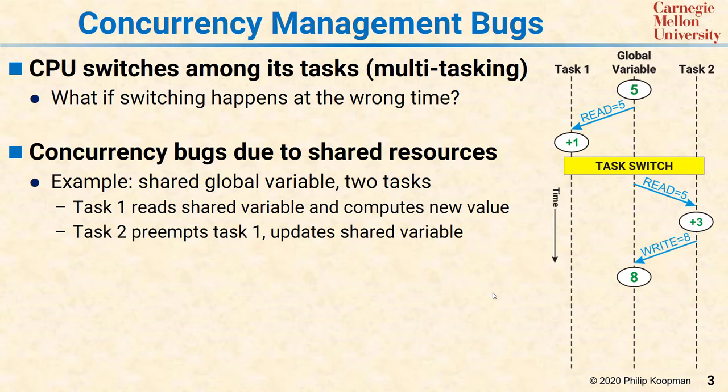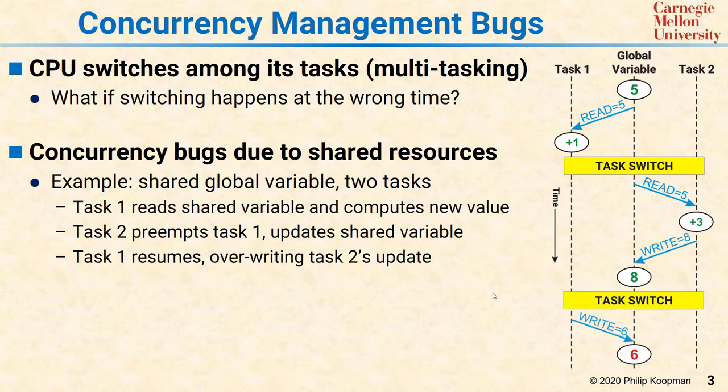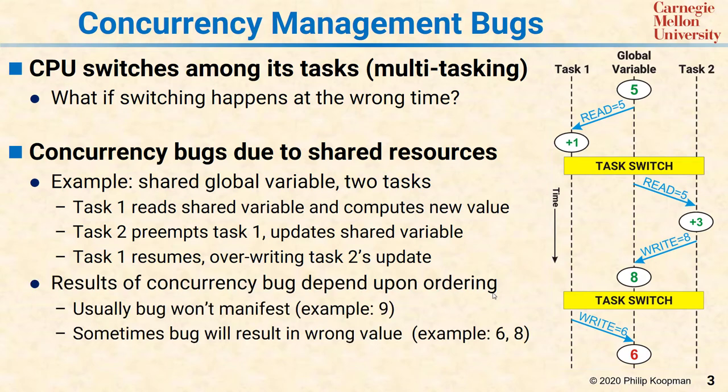But eventually the task switches back to task 1, and it still has 5 plus 1 and writes back its value 6. If these two tasks run at different times, the global variable should be 5 plus 1 plus 3, giving you 9. But because task 2 got overwritten by the interrupted task 1, you get the incorrect value 6. This only happens when this particular interleaving occurs, meaning the results of the concurrency bug depend upon the ordering.